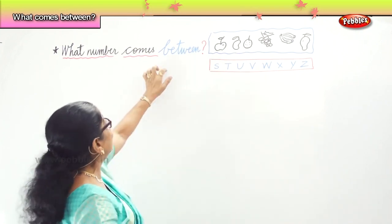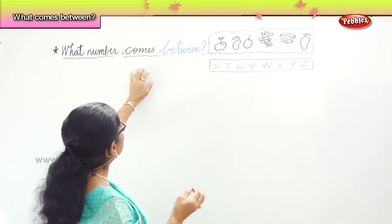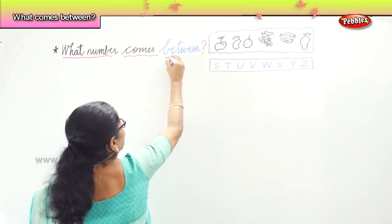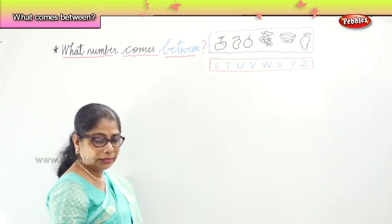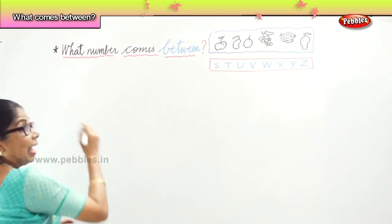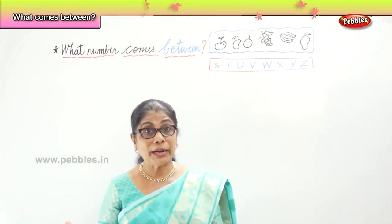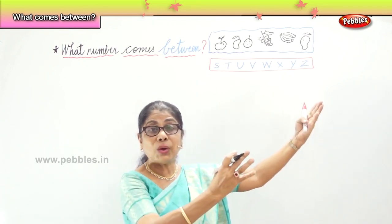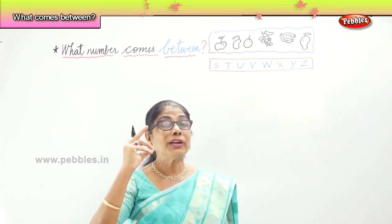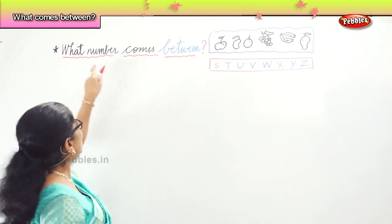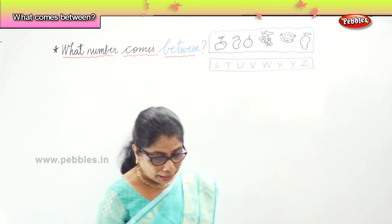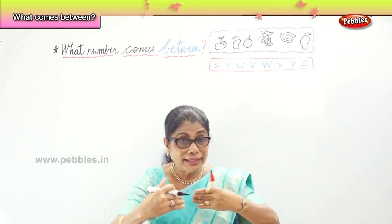Middle. Between. So we are learning what number comes between — that is number three. What number comes between? We learnt fruits, we learnt letters, but now I am going to ask you what number comes between. Having learnt the numerals one to hundred, forward counting and backward counting, now I am going to give you a small exercise for us to recollect and remember what number comes between. I am going to give you two numbers and you find the between number.